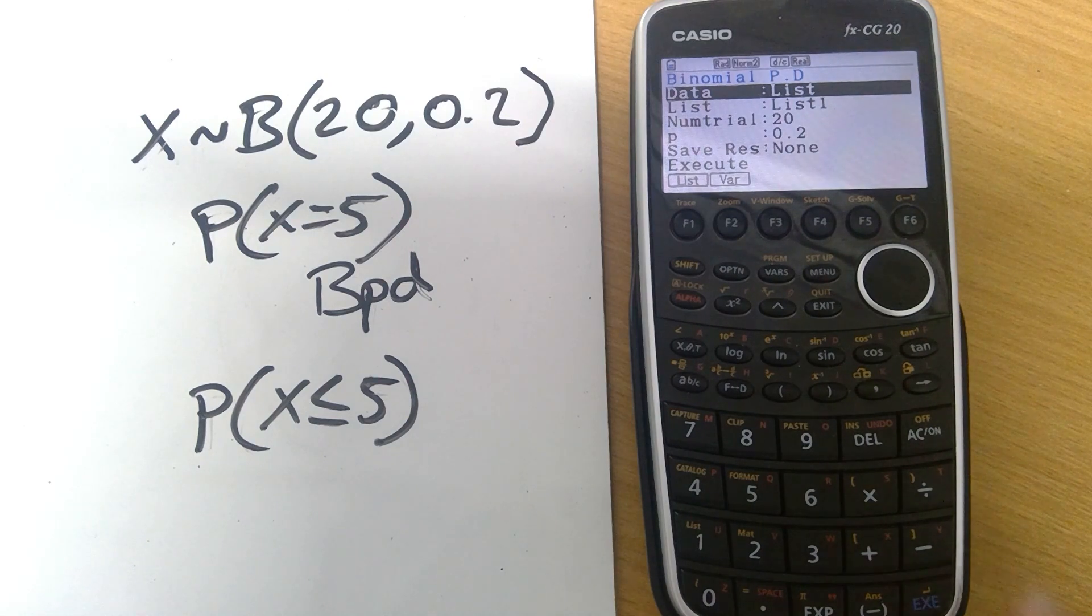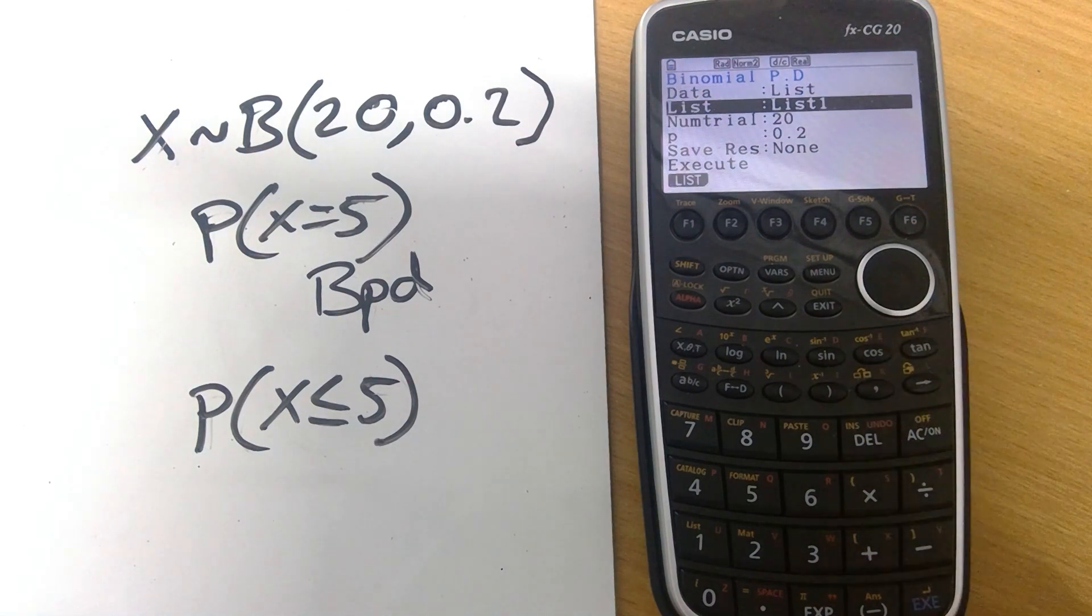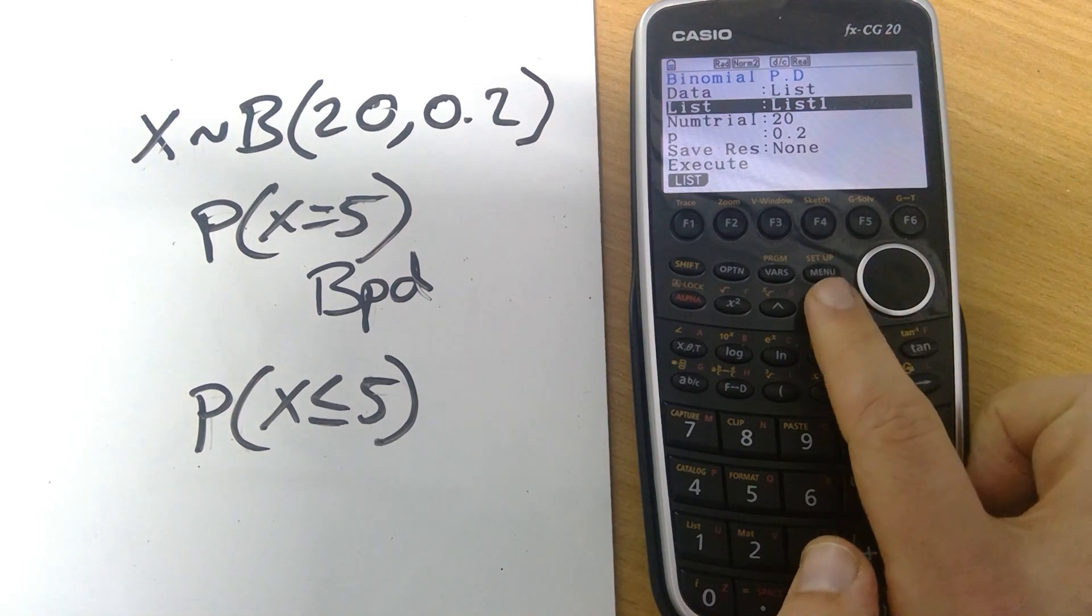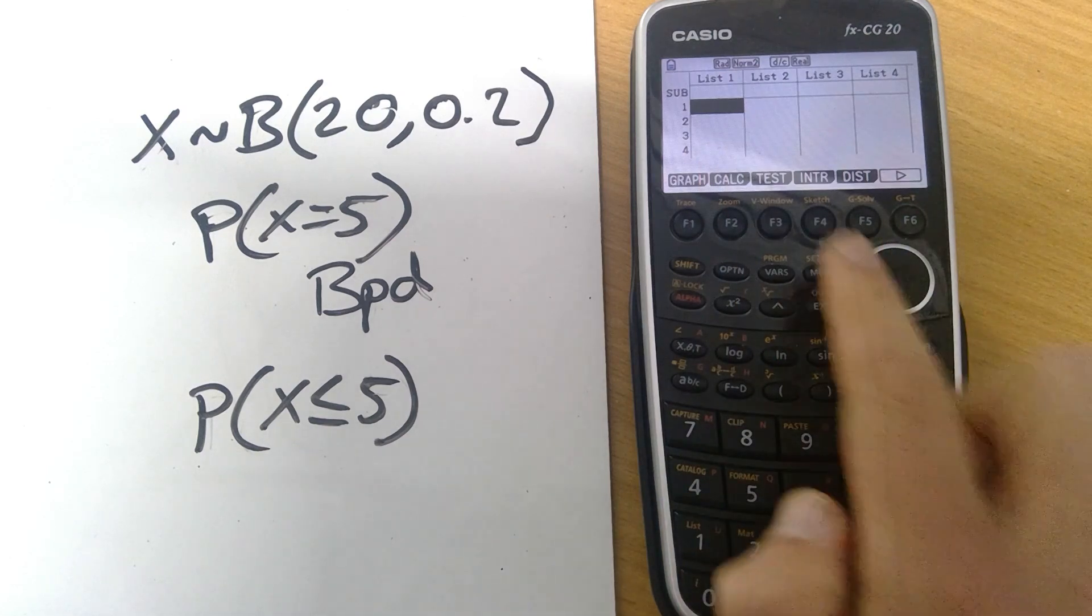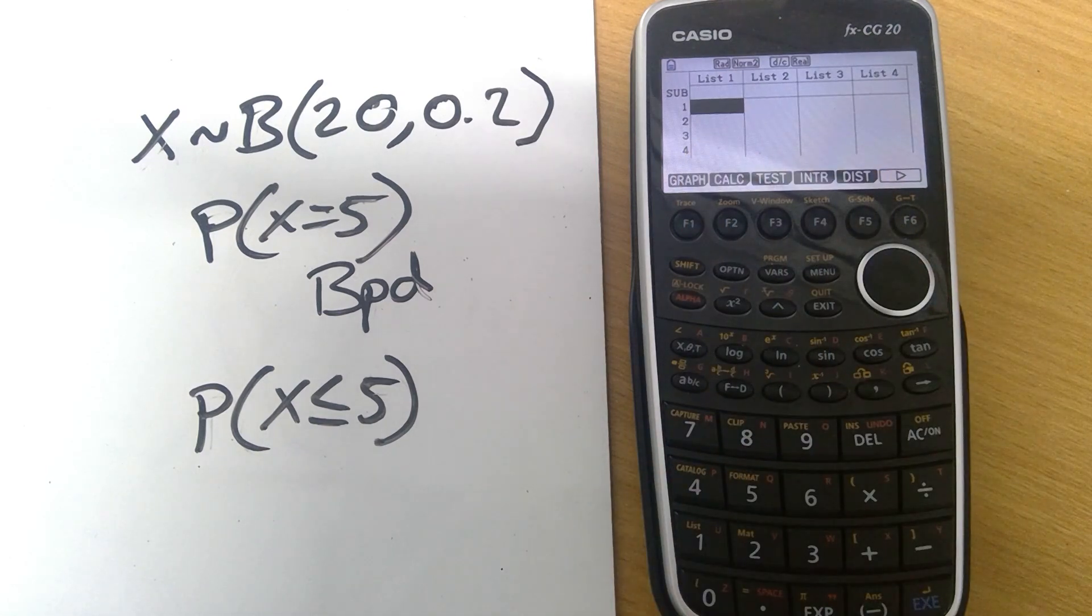In order to tell it where the information is coming from we need to make sure that it's finding it from the right list. This is going to be looking in list 1 to work out what values of X we've got. If we press exit we can see that at the moment our list 1 has nothing in it. This is where it would have saved the data earlier had we wanted it to.